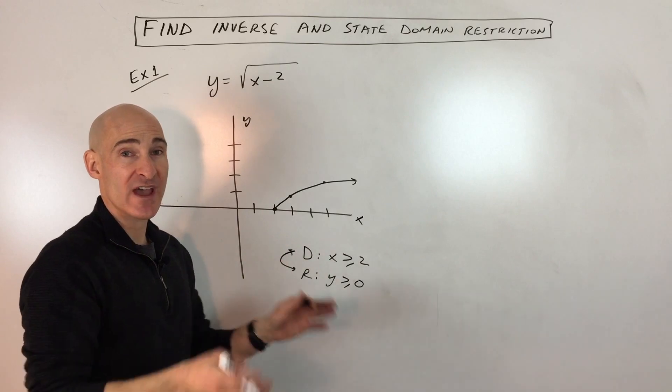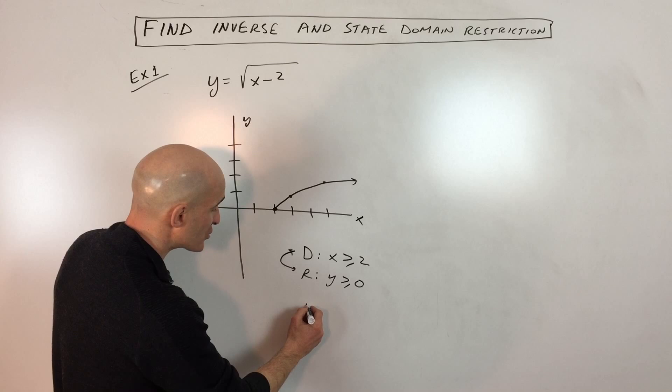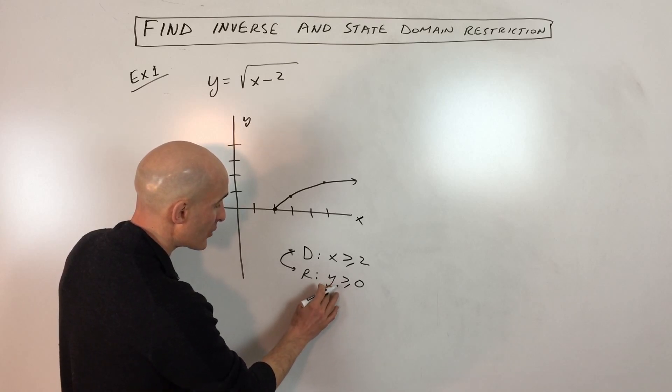So when you switch the x and the y, the domain and the range are also switching. So the domain and the range for the new function, the domain is now going to be, instead of the range here, that becomes the domain x is greater than or equal to 0.